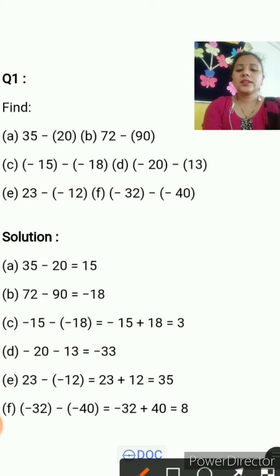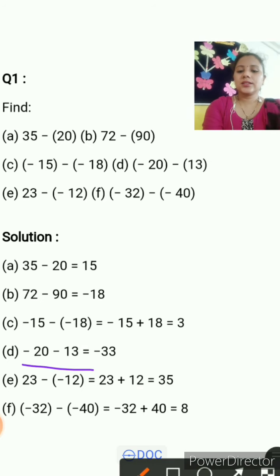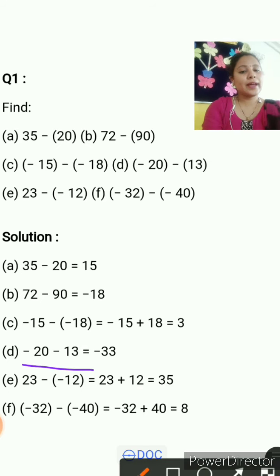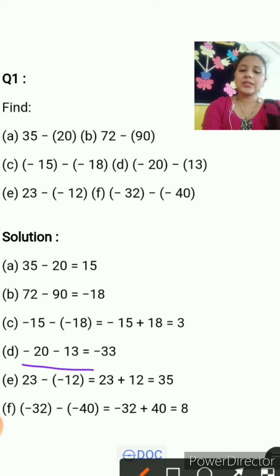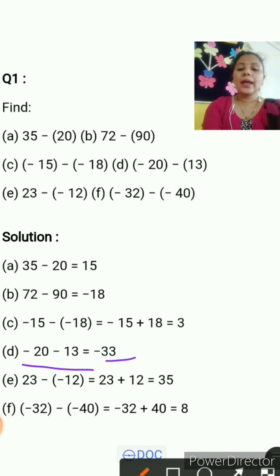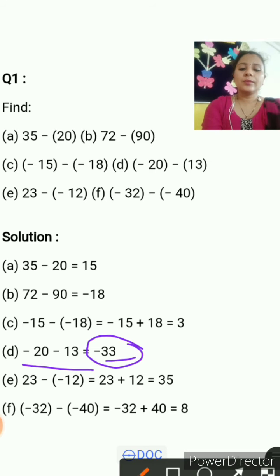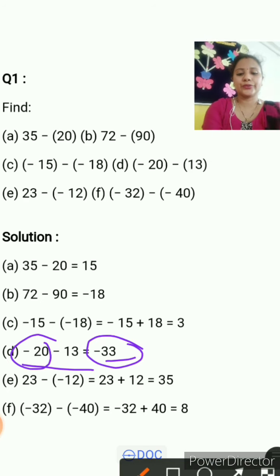Next is minus 20 minus minus 13. Minus minus becomes plus, so it becomes minus 20 plus 13. That gives us 20 plus 13 equals 33, but it is negative 33 because the greater value is negative.